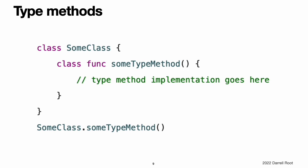In Swift, you can define type-level methods for all classes, structures, and enumerations. Each type method is explicitly scoped to the type it supports. Type methods are called with dot syntax, like instance methods. However, you call type methods on the type, not on an instance of that type. Here is how you call a type method on a class called some class. Within the body of a type method, the implicit self property refers to the type itself rather than an instance of that type. This means that you can use self to disambiguate between type properties and type method parameters, just as you do for instance properties and instance method parameters.